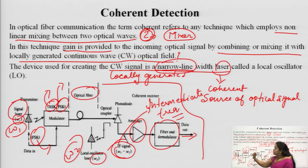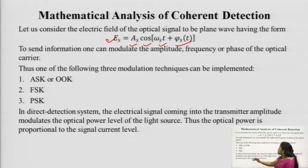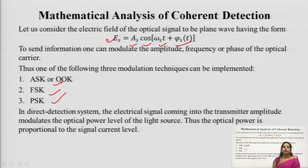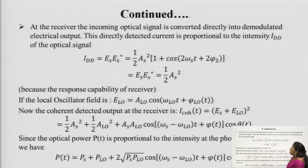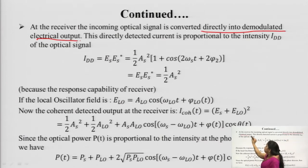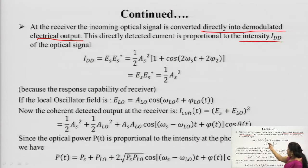The modulation follows one of the principles — ASK, PSK, or FSK — as per requirements. After modulation, the signal is transferred into the optical fiber. At the receiver, the incoming signal is converted into a demodulated electrical output after interacting with the photodiode. This directly detected current is proportional to the intensity of the optical signal.